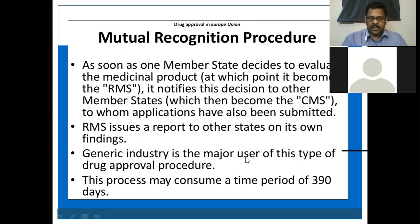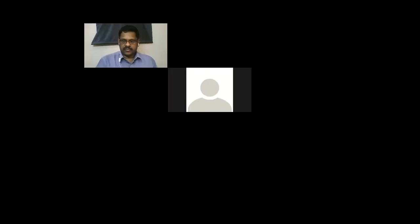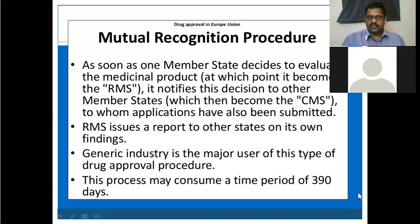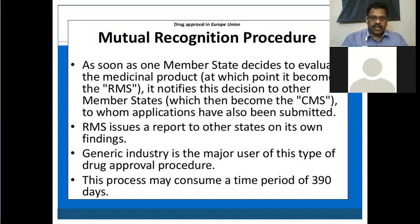Suppose you did not do your clinical trial in the European Union but are applying for the first time. Your drug needs to be evaluated. You apply to all the European Union countries where you want to market simultaneously. Among those countries, one country will take responsibility to evaluate your application — its pharmacological data and all submitted information. That one country will be called the RMS.